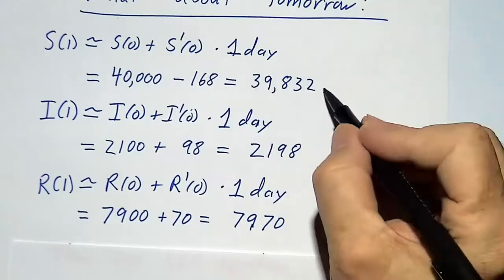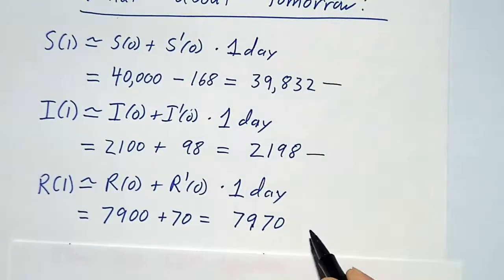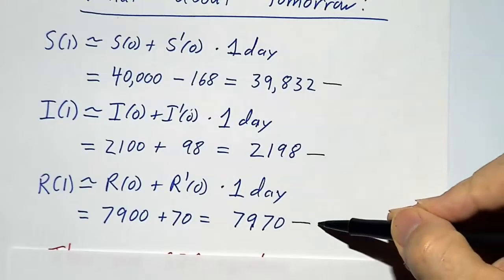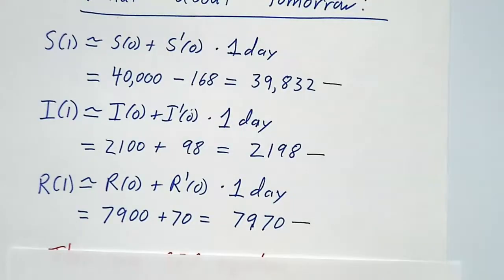Great. So now we know how many susceptibles, infecteds, and recovereds, how many potentials, actives, and rejecteds we have one day from now.